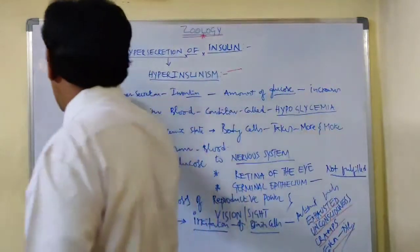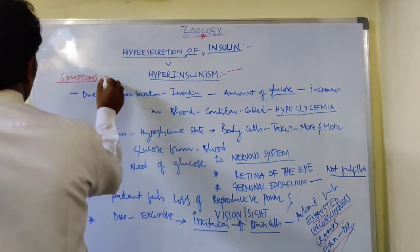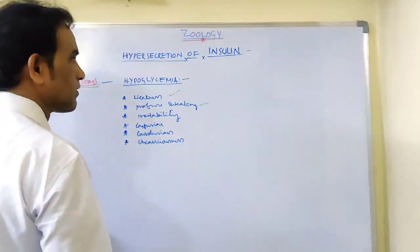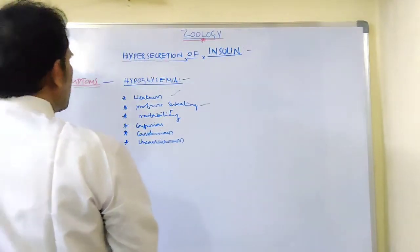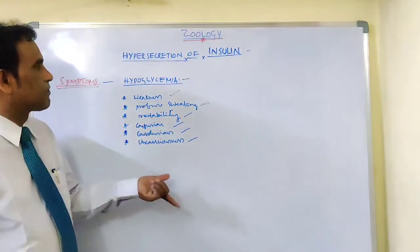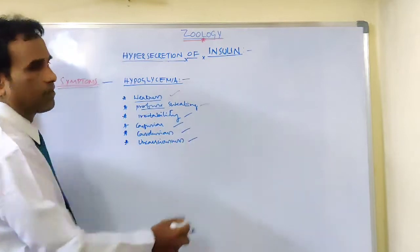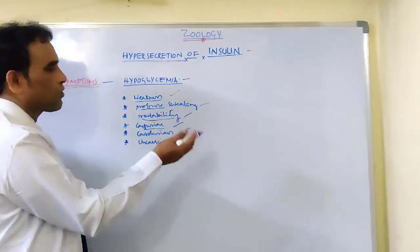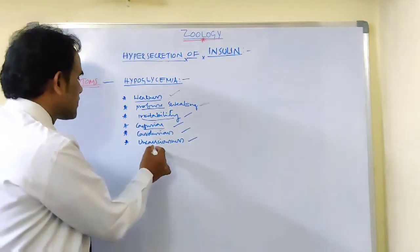Now let's see the symptoms of hyperinsulinism, that means hypoglycemia. The symptoms of hypoglycemia are: weakness, profuse sweating, irritability, confusion, convulsions — which may also be called fits — and unconsciousness.